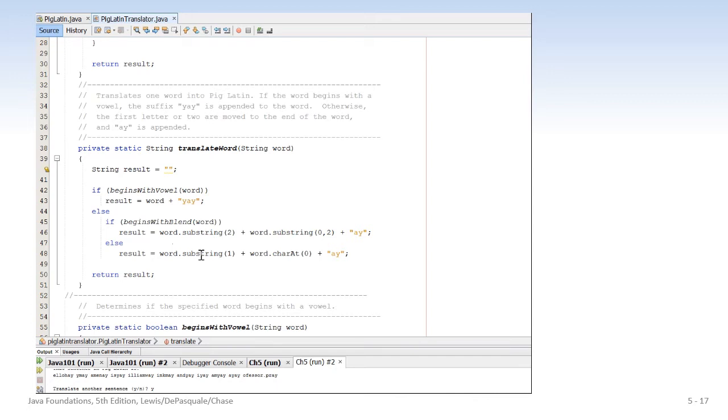Else, it begins with a consonant. There's no service method necessary for that. But if it begins with a consonant, word.substring(1), starting at index one, ignoring the consonant at the beginning to the end, plus word.charAt(0), which is the consonant, plus 'ay'.